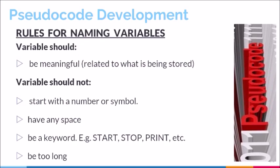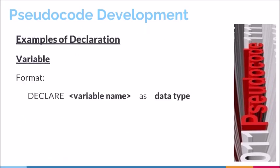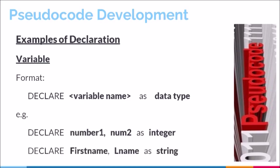Let us look at the format and structure of declaring a variable. The format normally used is the keyword declare, followed by the variable name, followed by the data type. For example, the first line of declaration has the variable names number1 and number2 declared as integers. The second line declares variables fname and lname as strings. When declaring variables of different data types, we use separate lines to make reference to them.